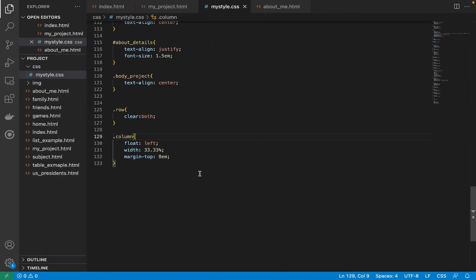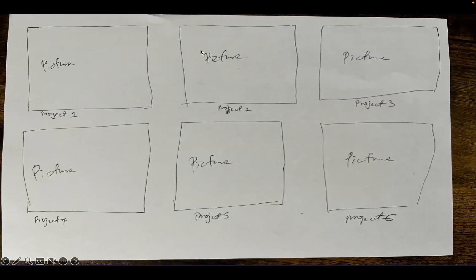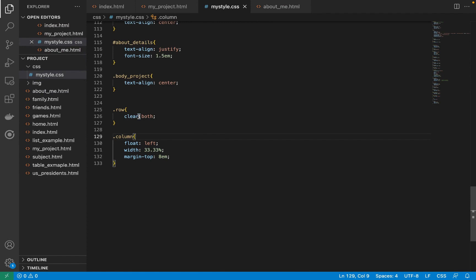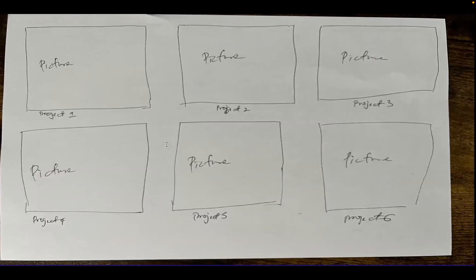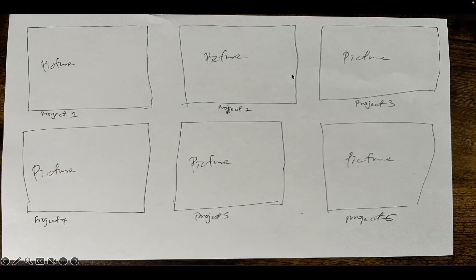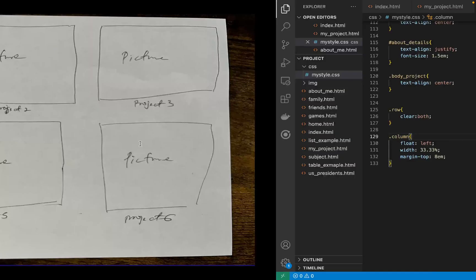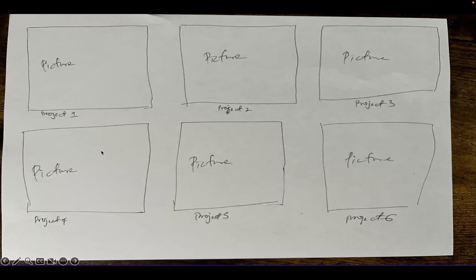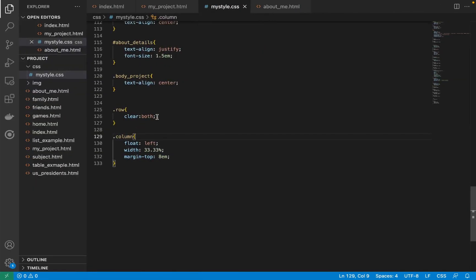The 'clear: both' is used to clear the float. Because I have 'float: left' on all three columns, for the next row I want it to start on a new line — I don't want it to also float left out of that row. So 'clear: both' clears the floats and starts a new line.